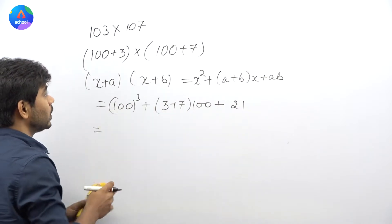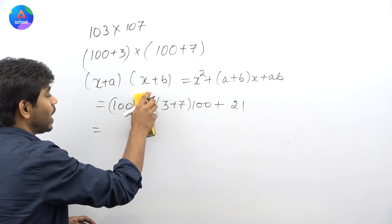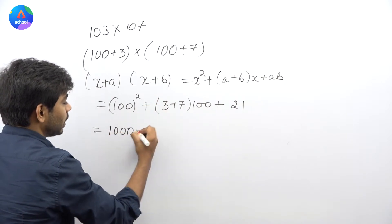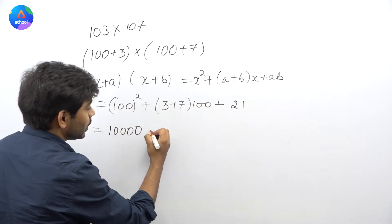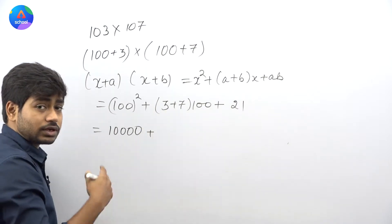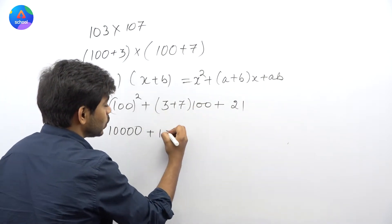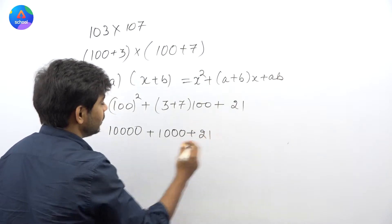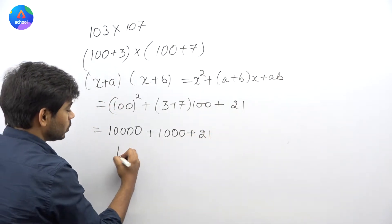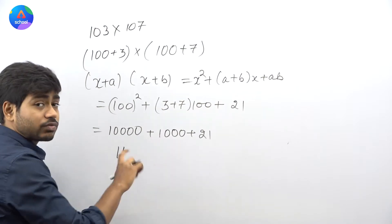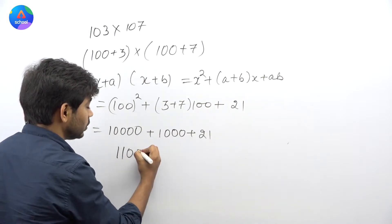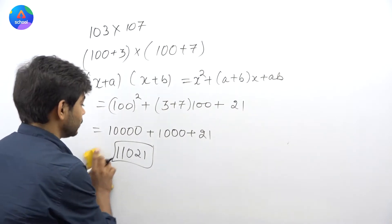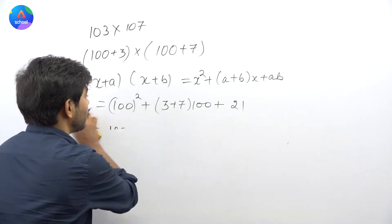तो यह हो जाएगा: 100² = 10,000, plus (3+7) × 100 = 10 × 100 = 1,000, plus 21. Add करेंगे: 10,000 + 1,000 = 11,000 + 21 = 11,021. यह आपका पहला part हो गया। अब next part की बात करते हैं।